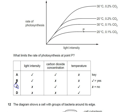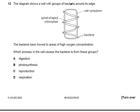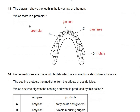Question 12: a diagram shows a cell with bacteria grouping around its edges near areas of high oxygen concentration. The cell has spiral-shaped chloroplasts. The bacteria are forming groups near the chloroplasts because the process occurring is photosynthesis, which releases oxygen. The answer is photosynthesis.